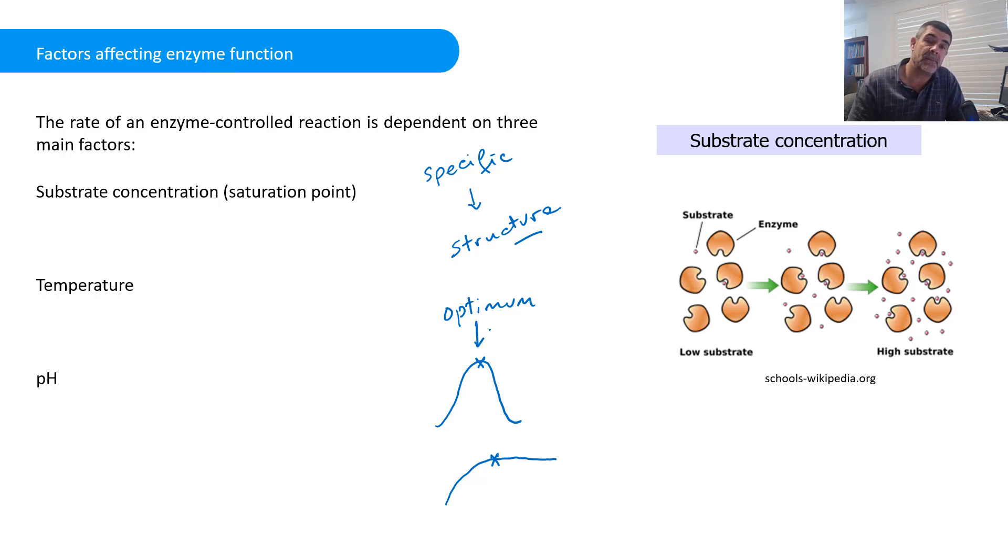The main factors that affect enzyme function are substrate concentration, temperature, and pH. pH is just another word for acidity.